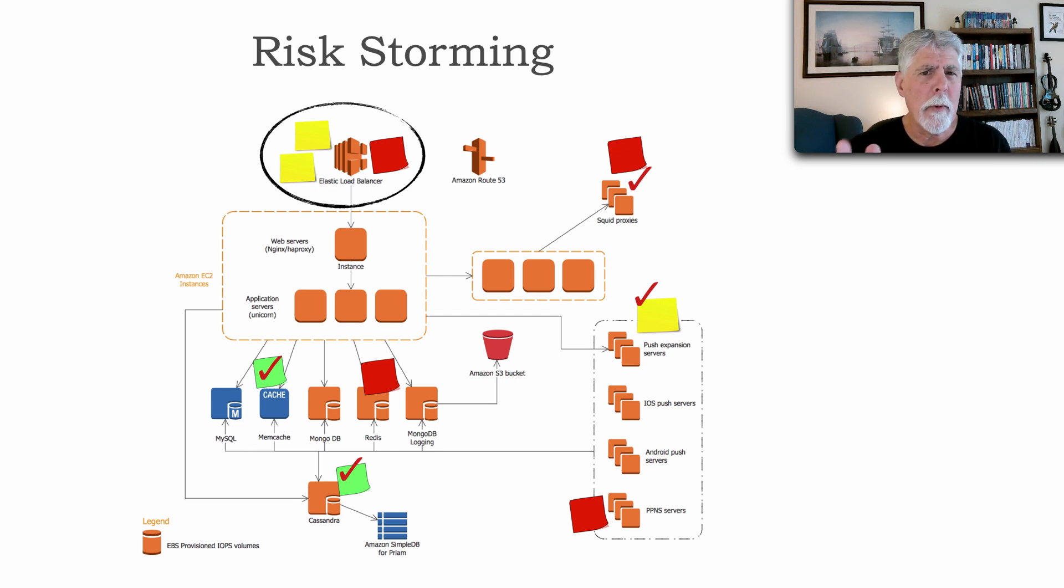Who put the red nine there for high risk? And somebody says, I did. Why'd you put red? Well, listen, if we lose those elastic load balancers, there's no access into the system. That's pretty high risk.